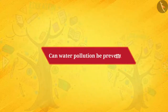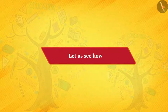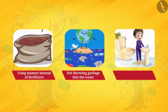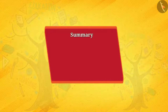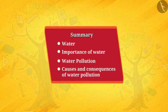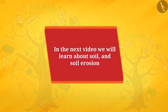Can water pollution be prevented? Yes, it can be prevented. Water pollution can be prevented by using manure instead of fertilizers, by not throwing garbage into the water, and by not throwing chemicals into the sink or toilet. So, what did we learn in this video? Water, importance of water, water pollution, and the causes and consequences of water pollution. In the next video, we will learn about soil and soil erosion.